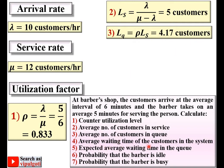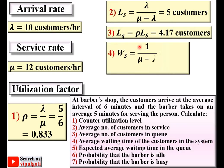Next, the average waiting time of the customer in the system, denoted WS. Using the WS formula with mu and lambda, you get WS = 0.5 hour. Since this is a waiting time, the unit is hours — multiply by 60 to convert to 30 minutes.